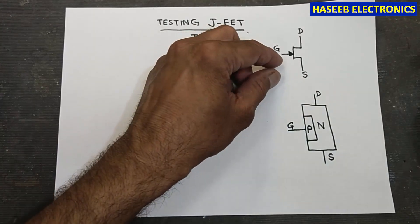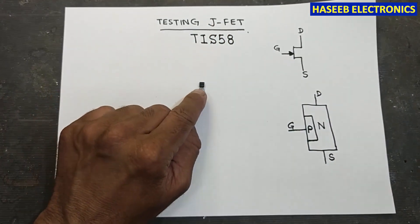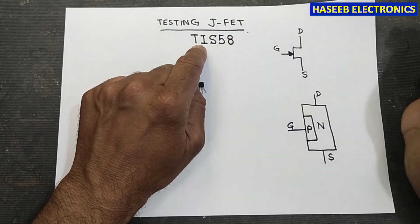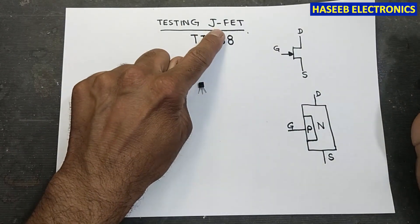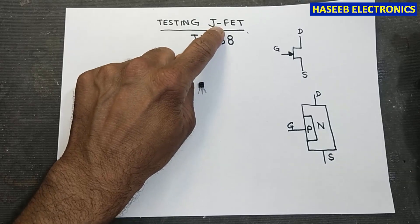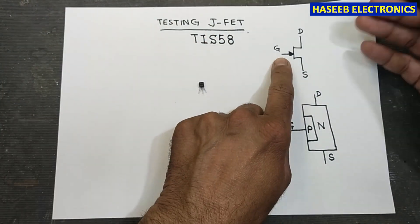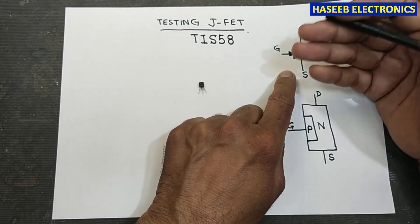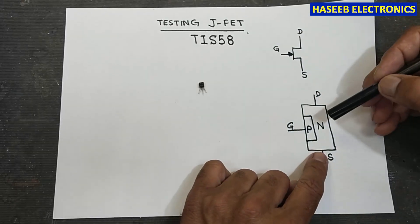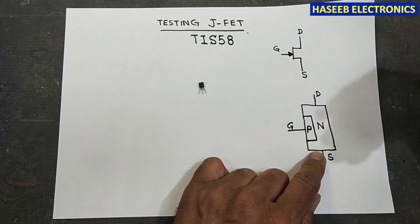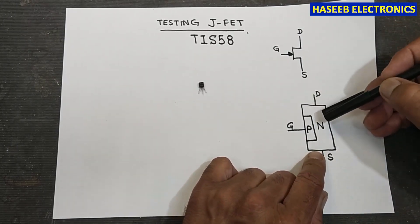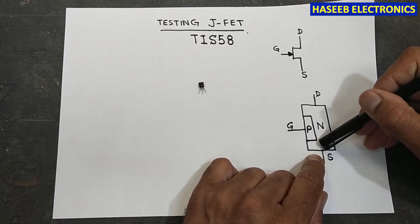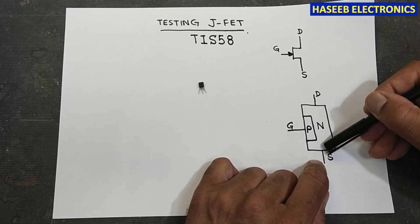Welcome back to my channel. In this session we will see the TIS58, it is from Texas Instruments — a JFET, junction field effect transistor. It is a transistor but its structure is different from a BJT (bi-junction transistor). In BJT we have NPN, but in a JFET we have one channel.